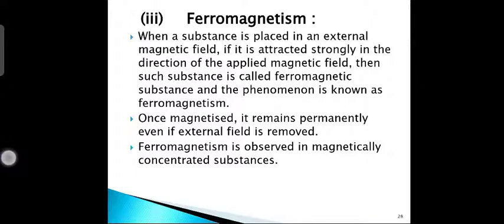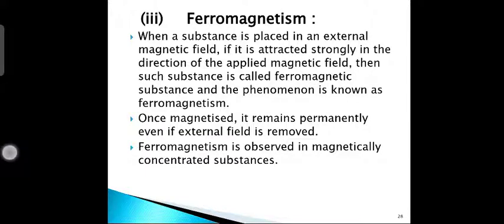Ferromagnetism is observed in magnetically concentrated substances. In these substances, the paramagnetic metal ions allow their total electron spins to interact with one another through exchange interaction. The exchange interaction is possible as the metal ions containing unpaired electrons are not isolated from one another. The total electron spin vectors of ions or atoms in a ferromagnetic substance are all coupled parallel to one another in a group of domains.